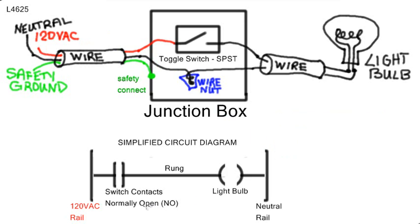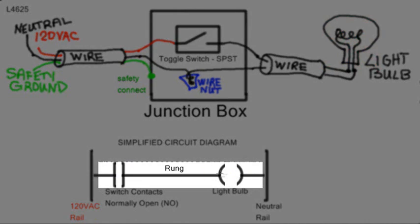Obviously when the switch contacts close, the light bulb is connected to the 120 volt source and the light turns on. The horizontal piece is called a rung.